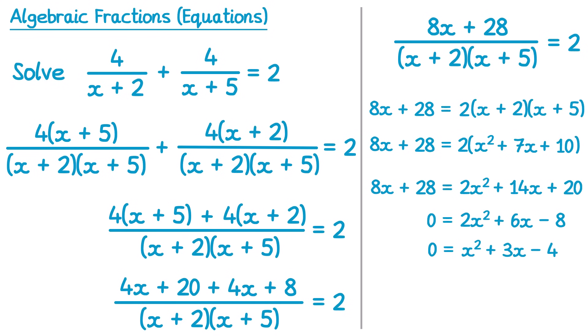Fortunately for us this quadratic will factorise. So on the left hand side we have 0, and the right hand side factorises to give x plus 4, x minus 1. This leads us to two solutions: either the first bracket is 0, so x plus 4 equals 0, in which case x is negative 4; or the second bracket equals 0, so x minus 1 equals 0, which gives us x equals positive 1.